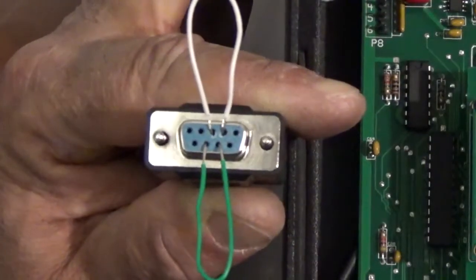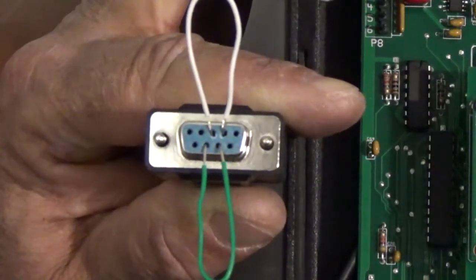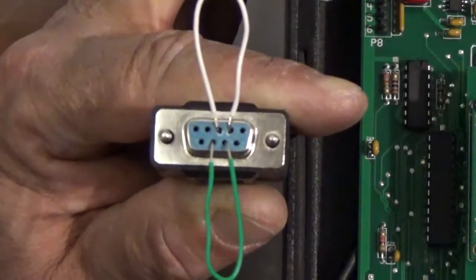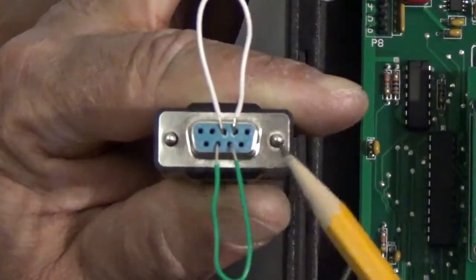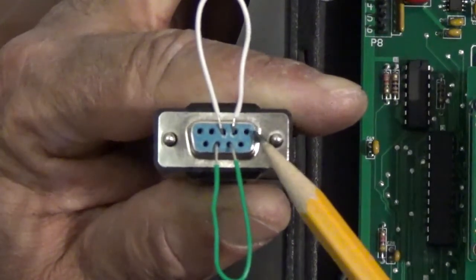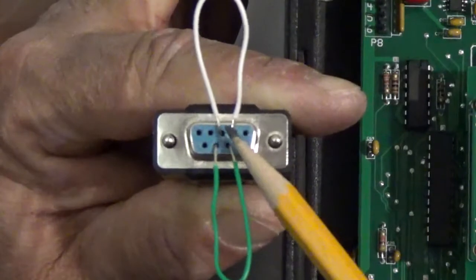This view here is looking at the female end of a DB9 connector on our serial cable. Let's look at the orientation here. We have the five holes on top and the four holes on the bottom. The upper right hole here is pinhole number one, to the left of that is pinhole number two, and the left of that is three.